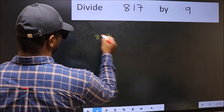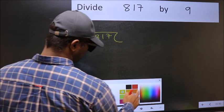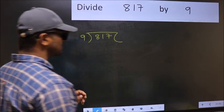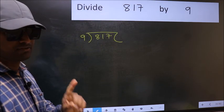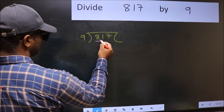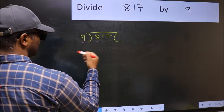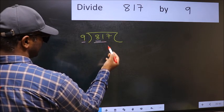817 and 9 here. This is your step 1. Next, here we have 8 and here 9. 8 is smaller than 9, so take 2 numbers, 81.